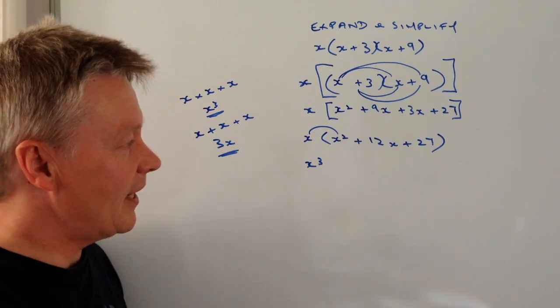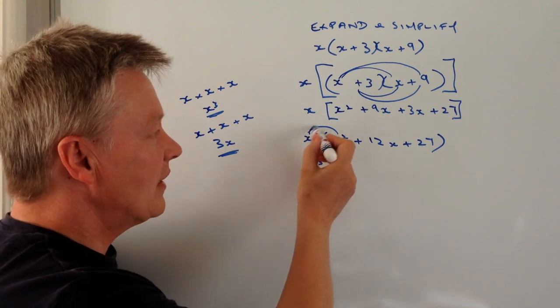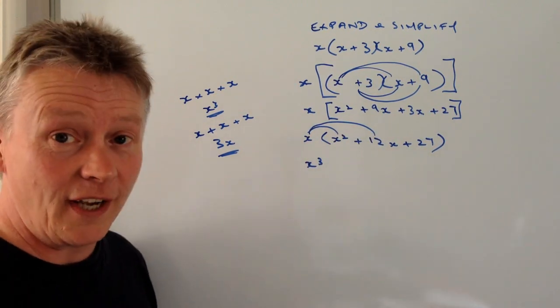So I've got x times x squared is x cubed. And then I've got x times plus 12x, that's going to be plus 12x squared.